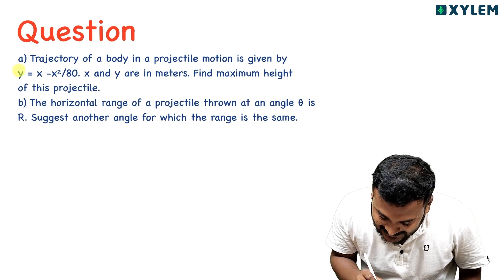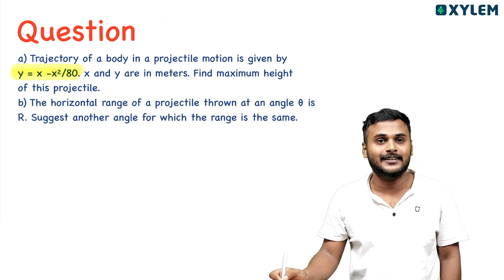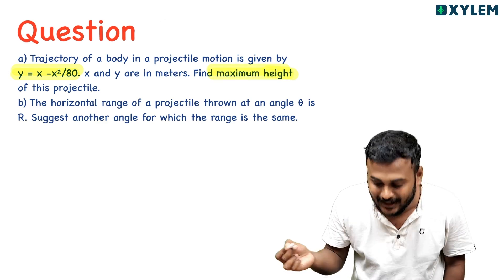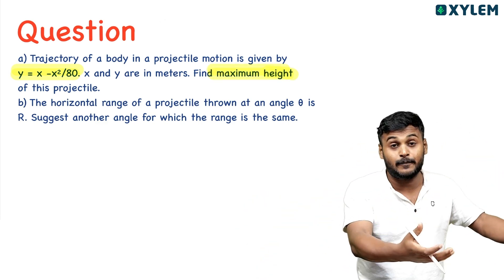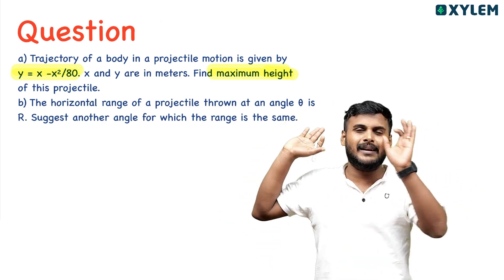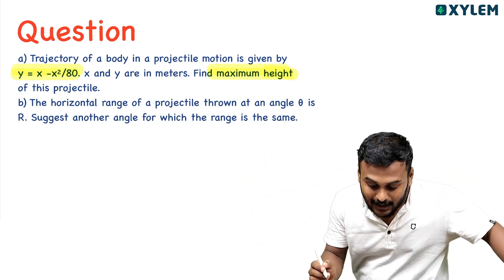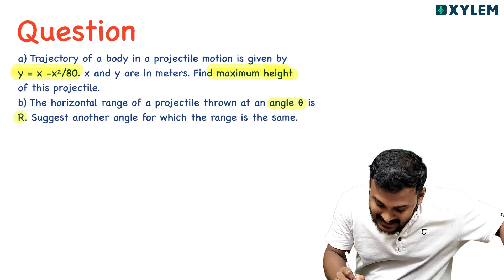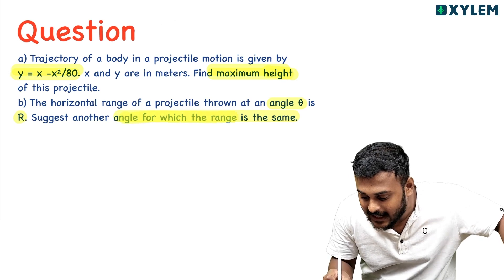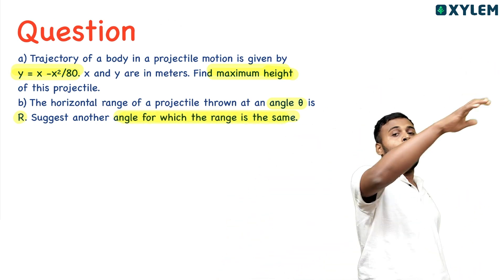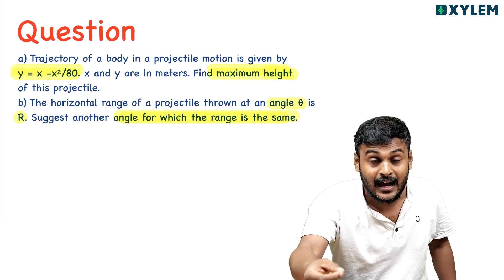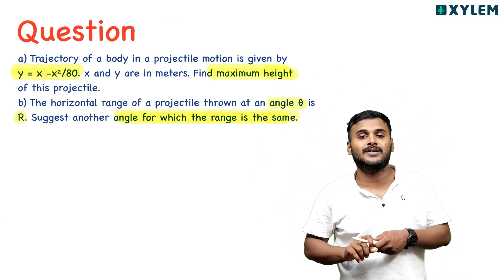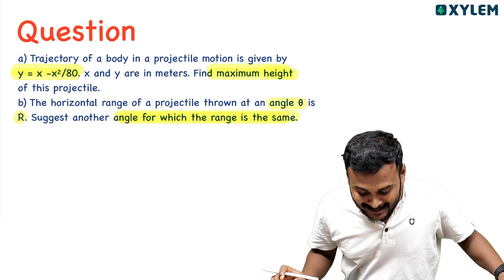There's a projectile motion which is given by an equation of projectile. We need to increase the height of the projectile. The horizontal range is R. Suggest another angle for the same horizontal range. If you look at the angle, the same horizontal range will be suggested. That's what we have done, so we have to work it out.